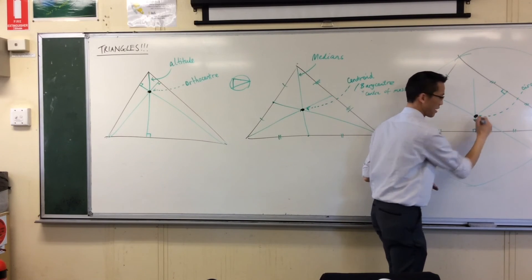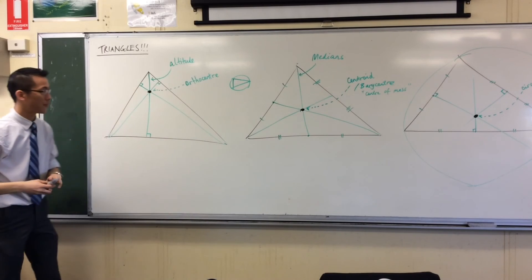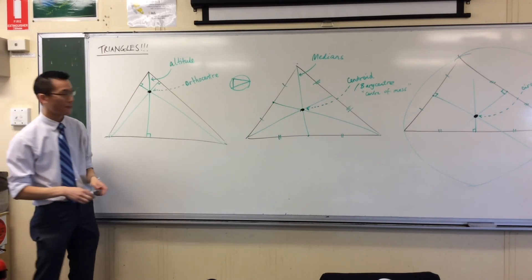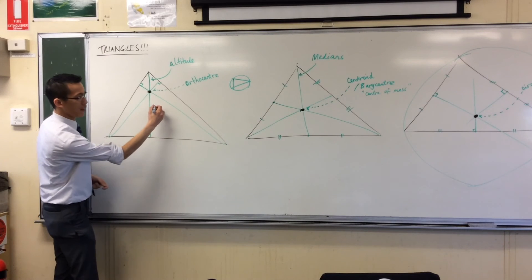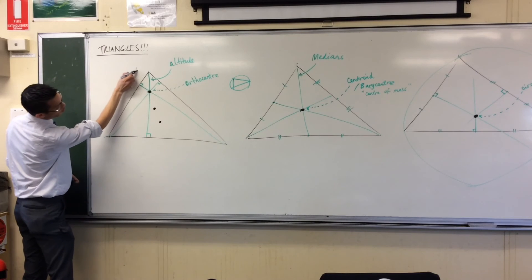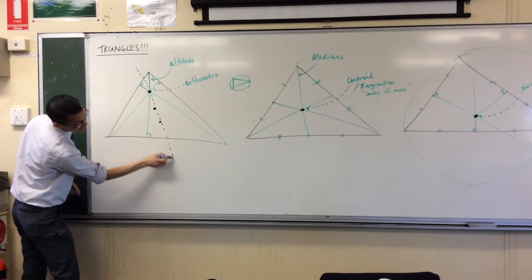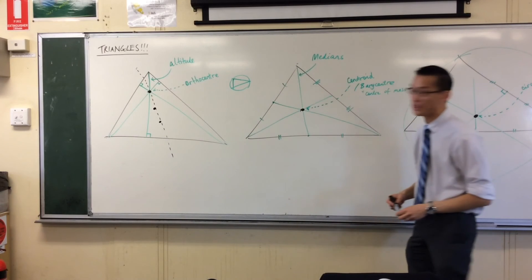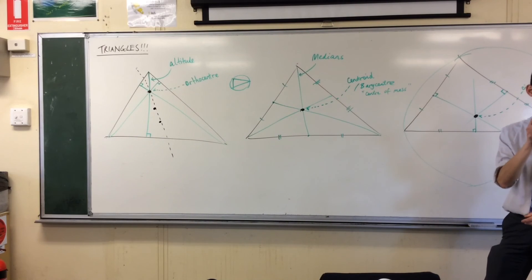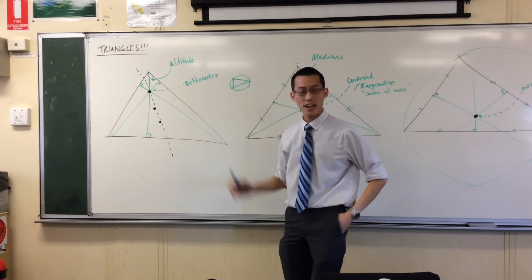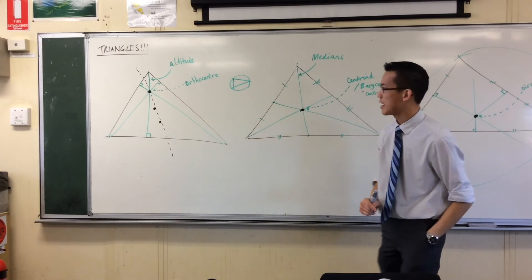They're all the same. These three centers of the triangle. All three centers are, in fact, if I put them all on the one triangle, they are all collinear. That line that they all pass through is called the Euler line, and when something's named after Euler, you know it's like a big deal. They are all collinear, always, every triangle.